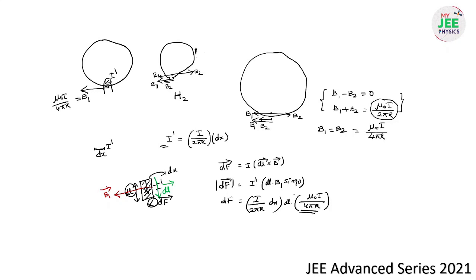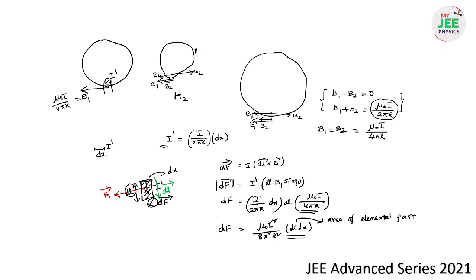So dF = μ₀I²/(8π²R²) · dL · dx. Now dL × dx represents the area of the elemental part on which force dF is acting. The force direction is inward — every elemental part experiences an inward force. Then force per unit area, which is the pressure, is: P = dF/(dx · dL) = μ₀I²/(8π²R²). So this is the magnetic pressure experienced by the hollow cylinder when it is carrying current I along its length.